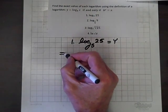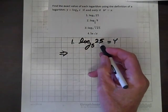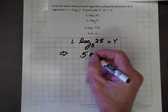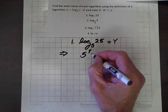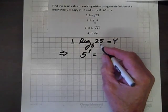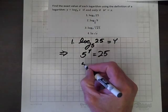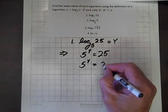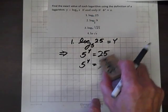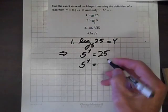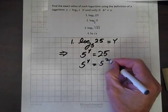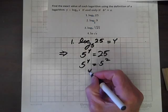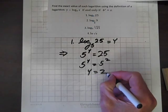This implies that, rewriting in exponential form, we have 5 to the y equals 25. Now, 25 can be written in terms of base 5, and 25 is 5 squared. So the only way this is possible is if y equals 2.